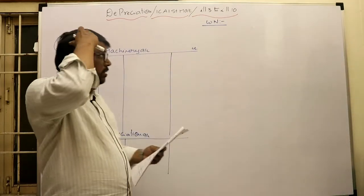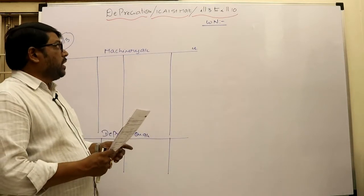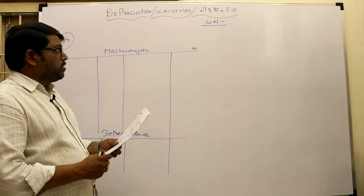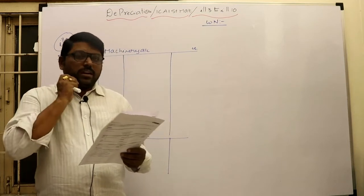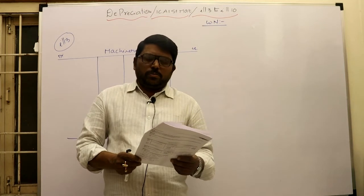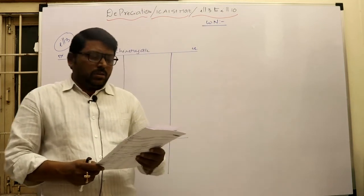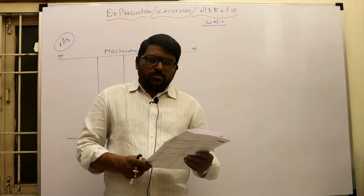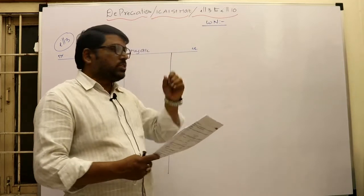Hi friends, today we are going to discuss again from the depreciation accounting ICI study material, illustrations 3 to 10. We are going to discuss the problems, but the annuity method and sinking fund method have both been deleted from the ICI syllabus, so except those two we can discuss all the remaining problems up to illustration 10 today.